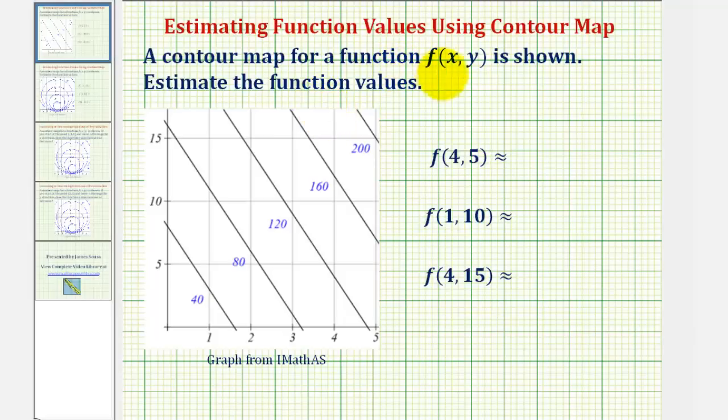The contour map for a function f of x comma y is shown. Estimate the function values using the contour map. So looking at the map for a moment, we have the x values along the horizontal axis, and we have the y values along the vertical axis.